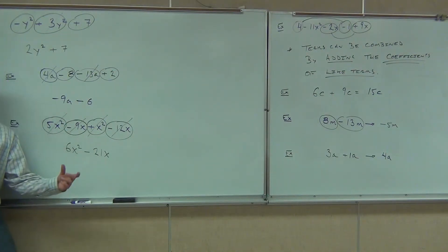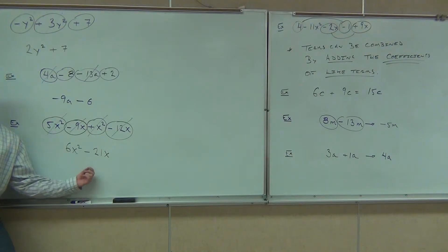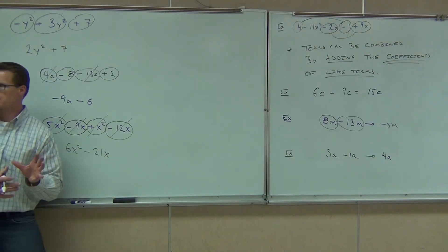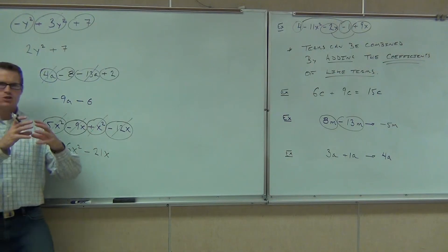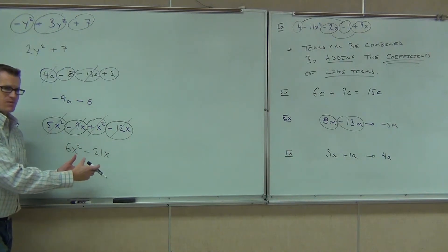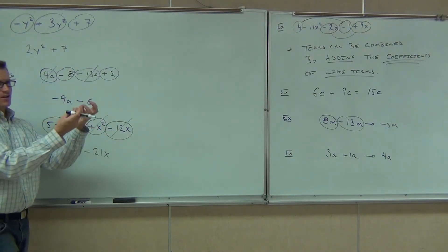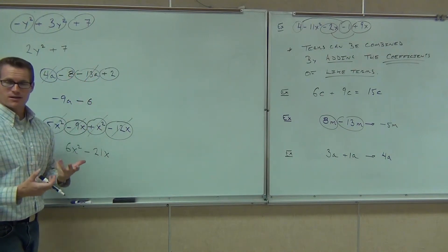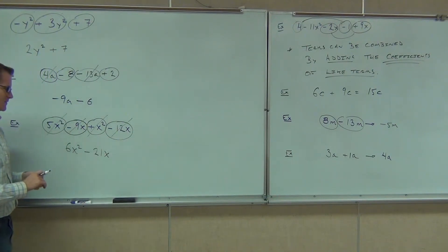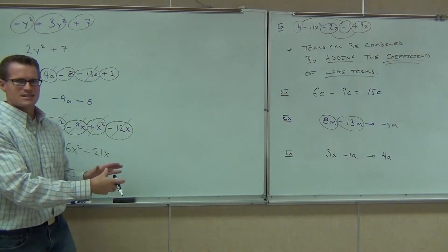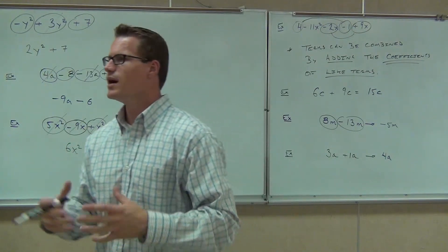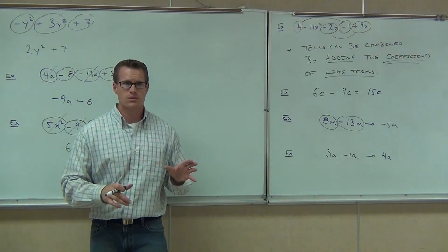Now, quick question — can you combine 6x squared and negative 21x? No. We can't combine things that aren't like terms, otherwise mathematics blows up in our face. Your paper starts burning, spontaneous combustion, and I start crying. You don't want that. But anyway, this is the idea: we can't combine those if they're not like terms. If they are like terms, great — just use those coefficients, use the addition rule, and combine your like terms that way. Are you ready to practice some on your own? Yes. Let's try that.